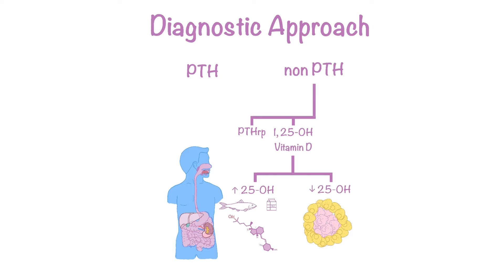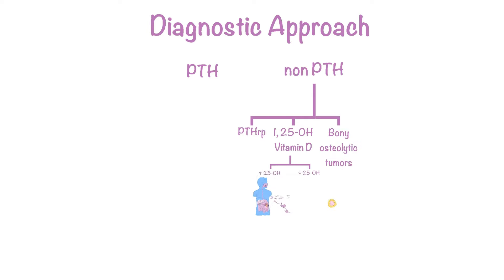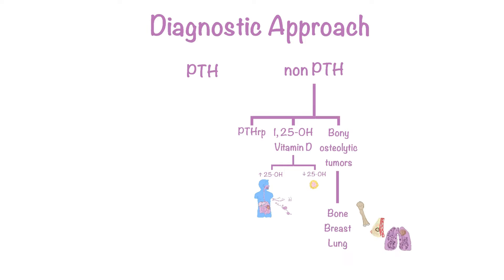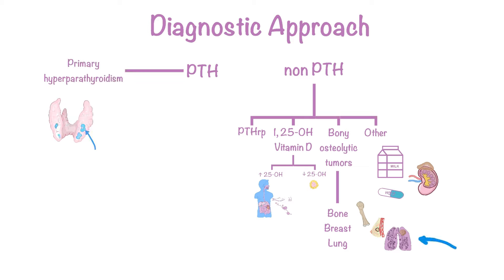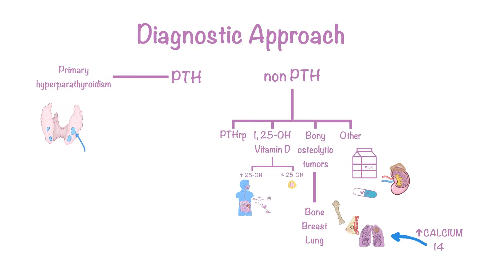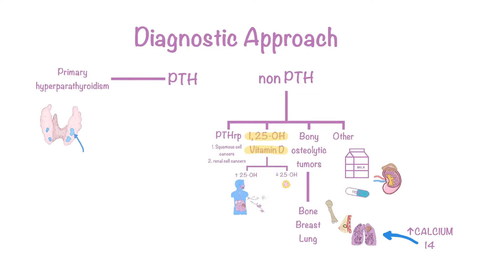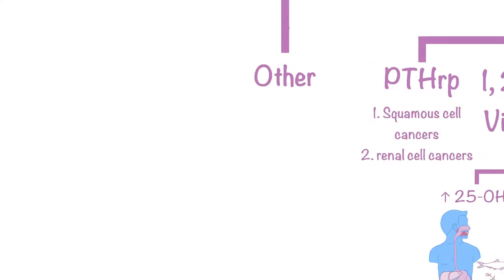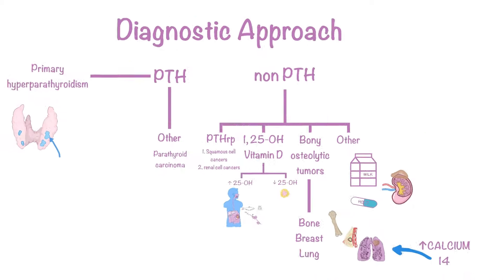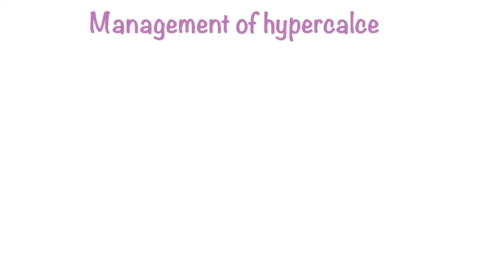Another possible culprit of hypercalcemia not attributable to high PTH is bony osteolytic tumors, often seen in metastatic bone disease — most commonly from breast or lung cancers. There's also an entirely different category of causes such as milk-alkali syndrome, hydrochlorothiazides, adrenal insufficiency, or immobilization. The two most common causes of hypercalcemia are primary hyperparathyroidism and malignancies. Typically a very high calcium over 14 is suggestive of malignancy. The most common causes of elevated PTHrP are squamous cell cancers and renal cell cancers. Lymphoma can cause increased 1,25-hydroxy vitamin D, and rarely PTH itself is the mechanism in parathyroid carcinoma.